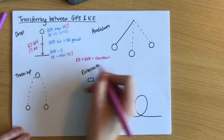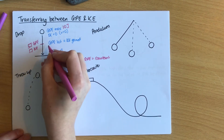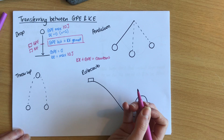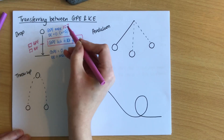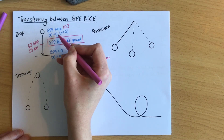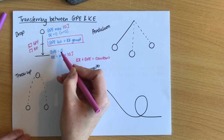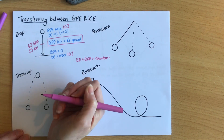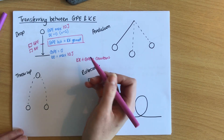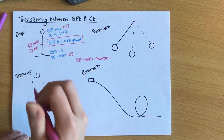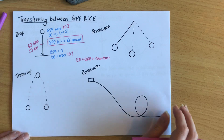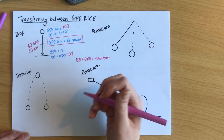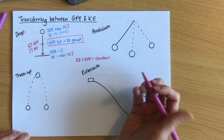That constant holds for all of them, as does the equation GPE lost equals KE gained. At the top: 10 plus 0 equals 10. At the bottom: 0 plus 10 equals 10. In the middle: 5 plus 5 equals 10. The combination is always constant, and that is because of the principle of the conservation of energy — energy in a closed system can't be created or destroyed; it can only be transferred from one form to the other.